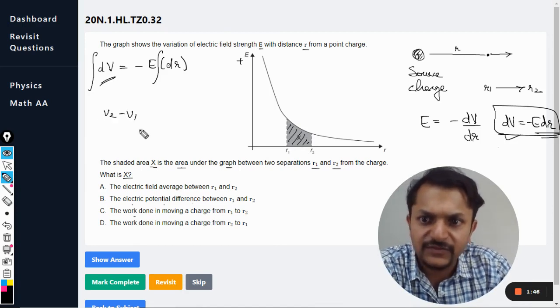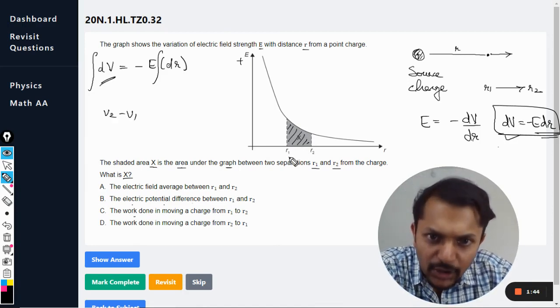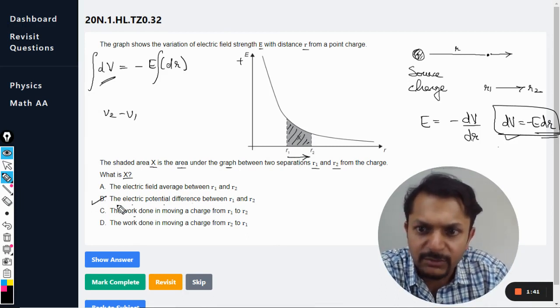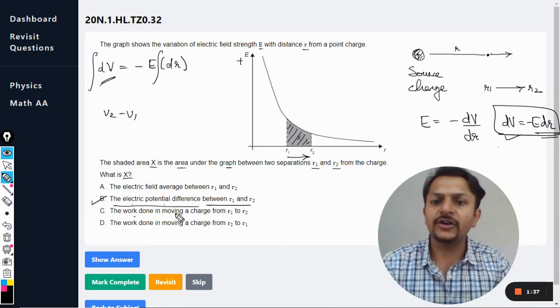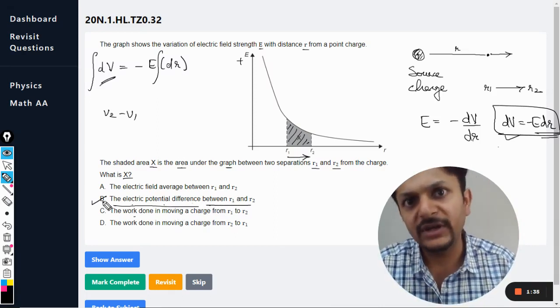The area under the curve is actually equal to the potential difference, which is V2 minus V1. The body is definitely moving from r1 to r2, so the answer will be B: the electric potential difference between r1 and r2.